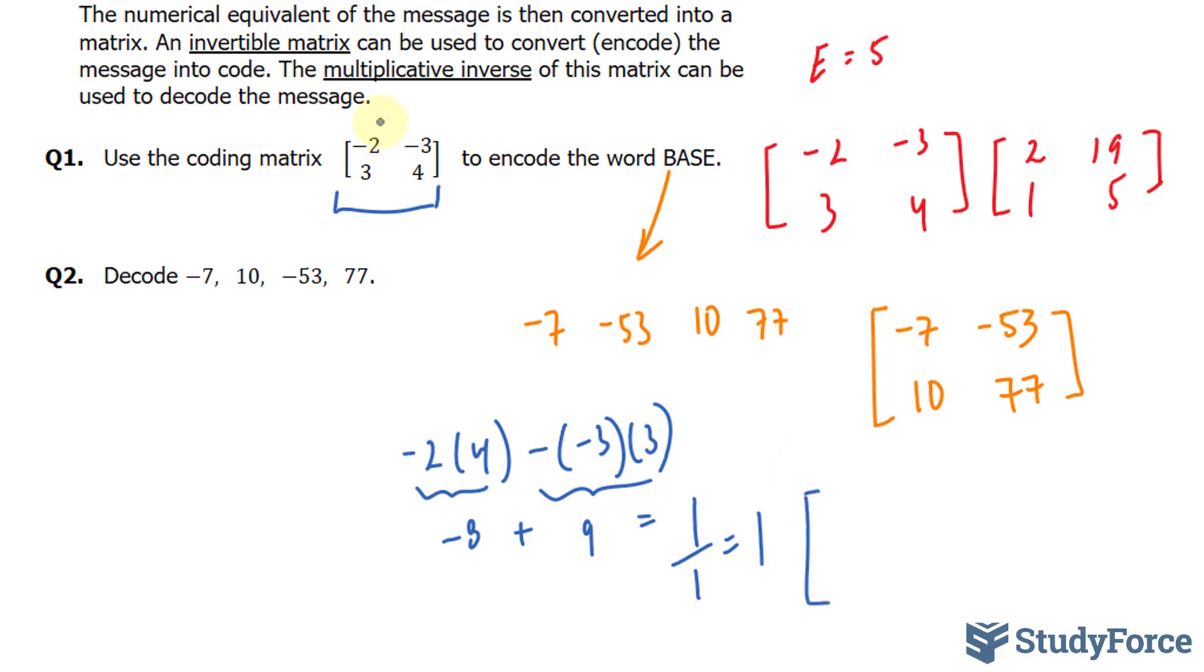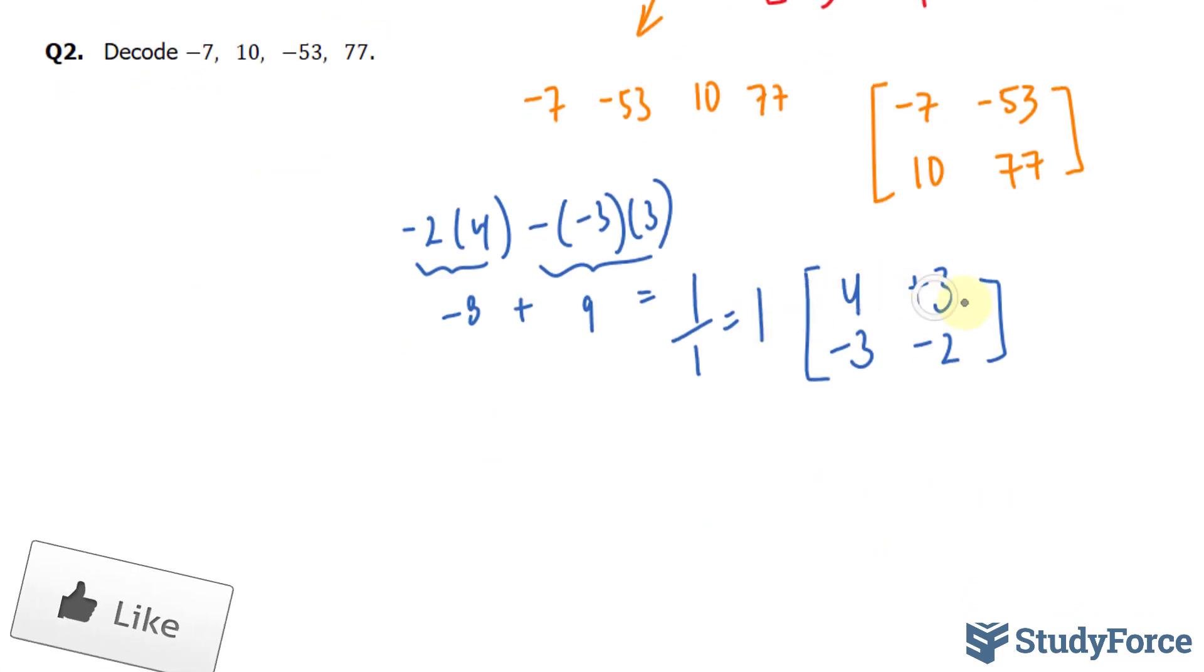So the next thing we have to do is switch the order of A and D. We have 4, -2, and switch the signs of these two numbers. So this -3 becomes positive 3, and this becomes -3. Multiplying 1 to each of these elements gives us the exact same matrix. That represents the inverse of our coding matrix.